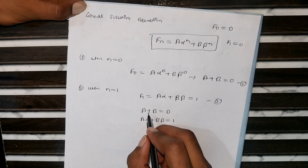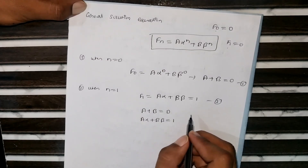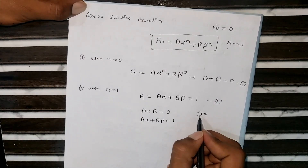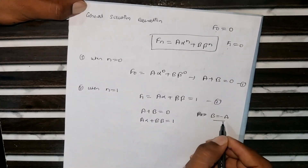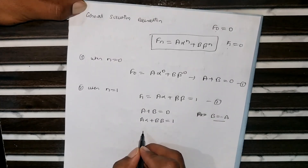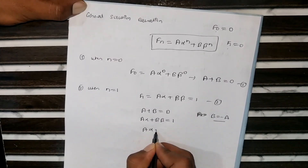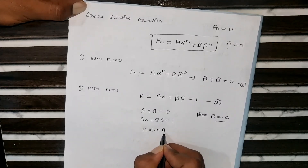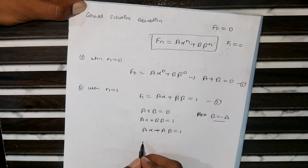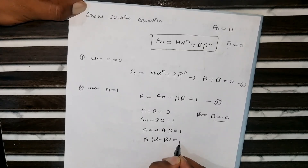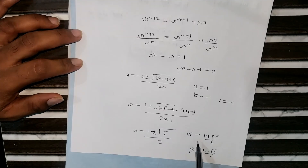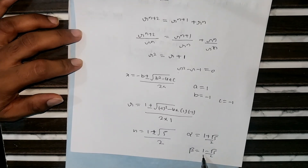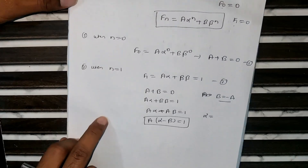Solve these two equations. From the first equation, B = −A. Substitute into the second equation: A·α + (−A)·β = 1, which gives A·(α − β) = 1. The values of α and β are (1 + √5)/2 and (1 − √5)/2 respectively, so substitute these values.